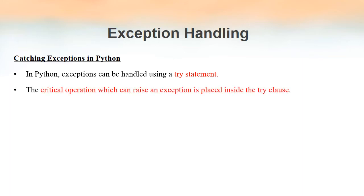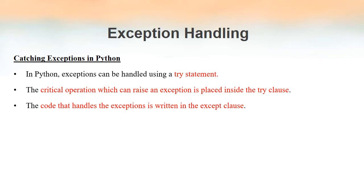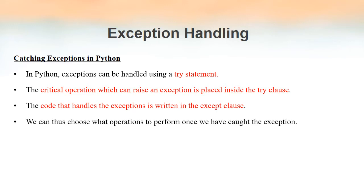If any lines of code raise an exception within the try clause, those exceptions can be handled by using the except clause. The lines of code that we want to execute when an exception occurs must be written inside the except clause, while the lines that may raise an exception must be written inside the try clause. By using try and except clauses we can choose what must happen when an exception is raised.